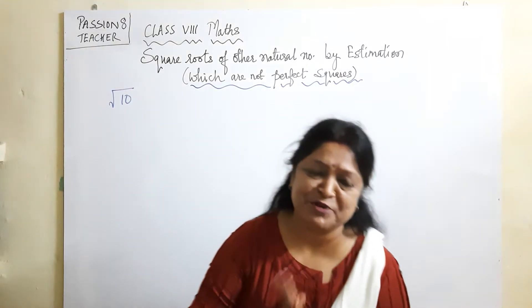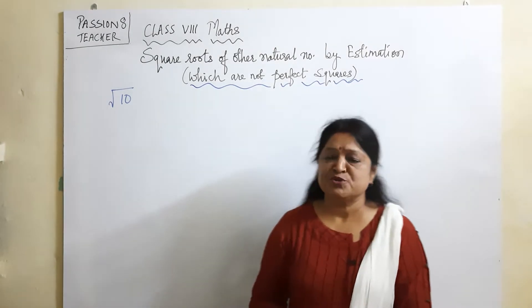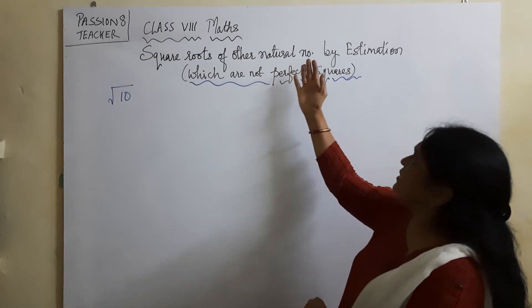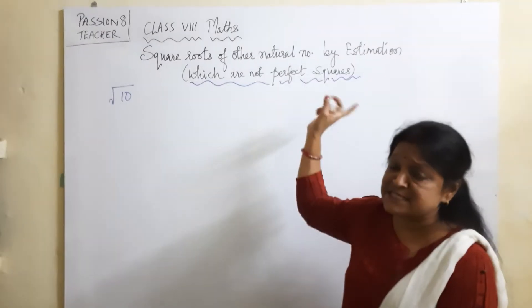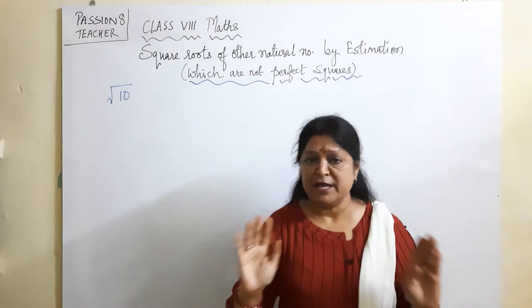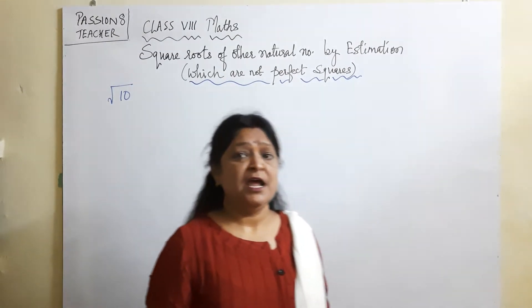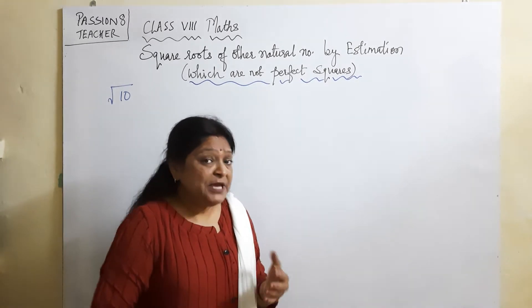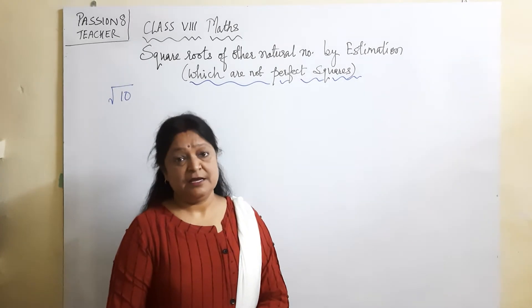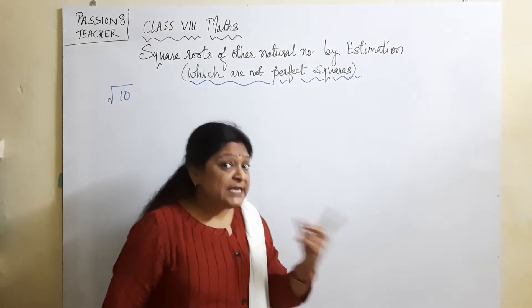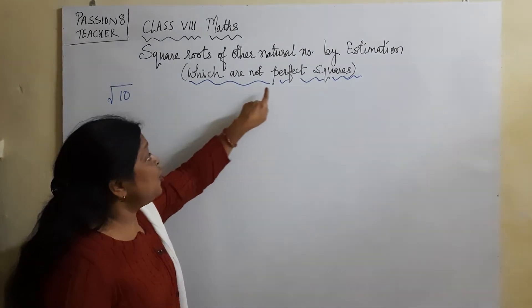Hello namaste everyone. Class 8 students, the topic now is square roots of other natural numbers by estimation. I'll not do prime factorization, I'll not go by long division method, I'll not do anything. Only I'll estimate. How can we find square roots by estimation for numbers which are not perfect squares?